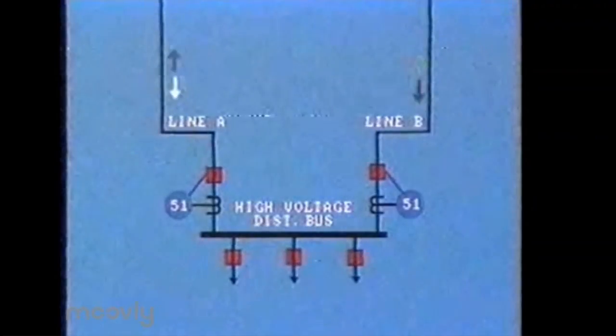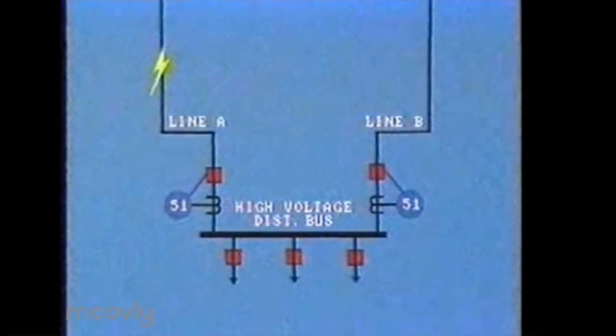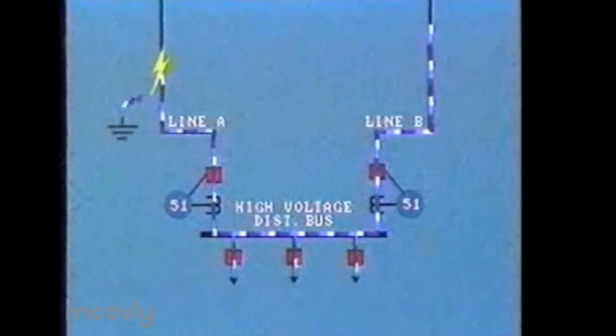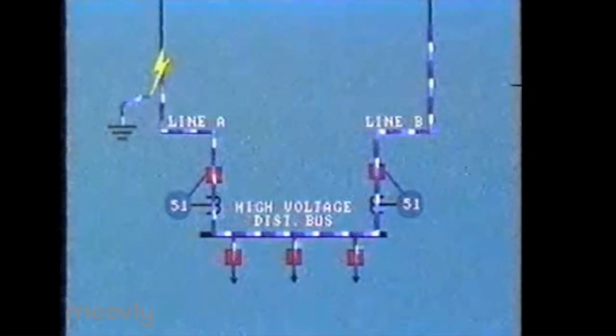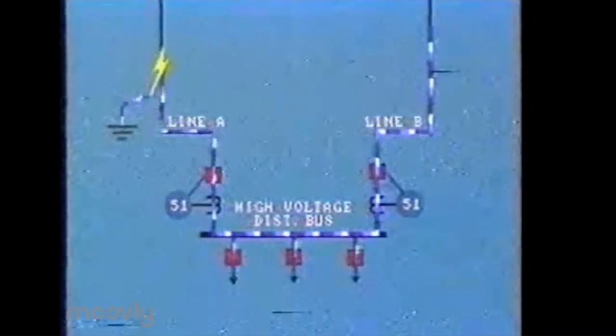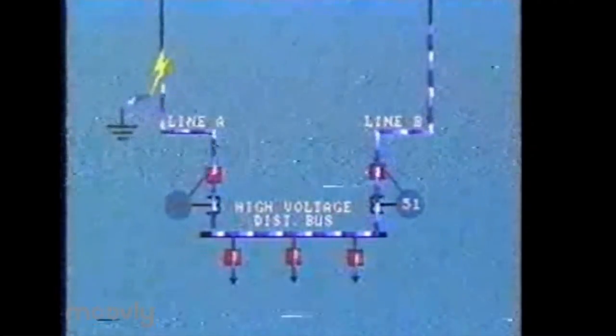When there is a fault condition in line A, like an LG fault, current travels from line B to the bus and from the bus to line A. When there is an overcurrent in line A, the overcurrent relay 51 in line A detects it and shuts down power to line A.